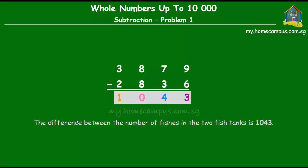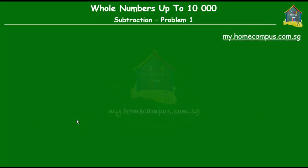So the difference between the number of fishes in the two fish tanks is 1043. That's the end of this lesson.